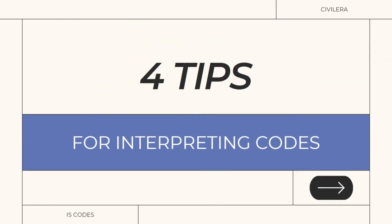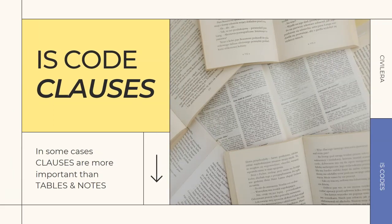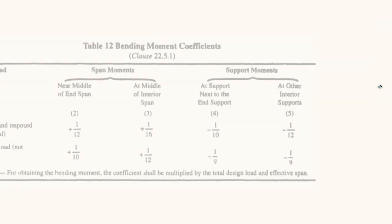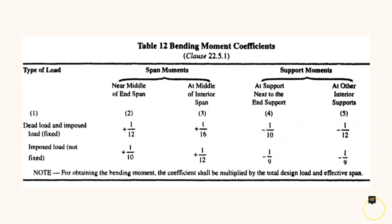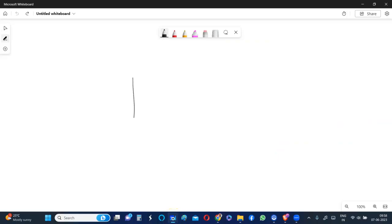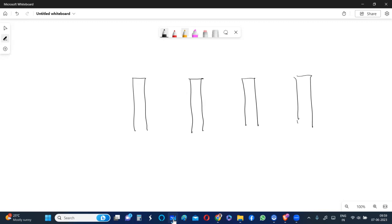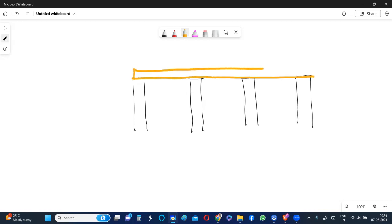Here are four of my tips for interpreting codes. The first tip is that in some cases, your code clauses are more important than tables and notes in that particular clause. Let me demonstrate this with an example. Here you can see Table 12, which gives bending moment coefficients for dead load and imposed load — fixed. You have WL²/12 at the middle of an end span, WL²/16 at the interior span. If I put this into a bending moment diagram, these are simply supported continuous beams.